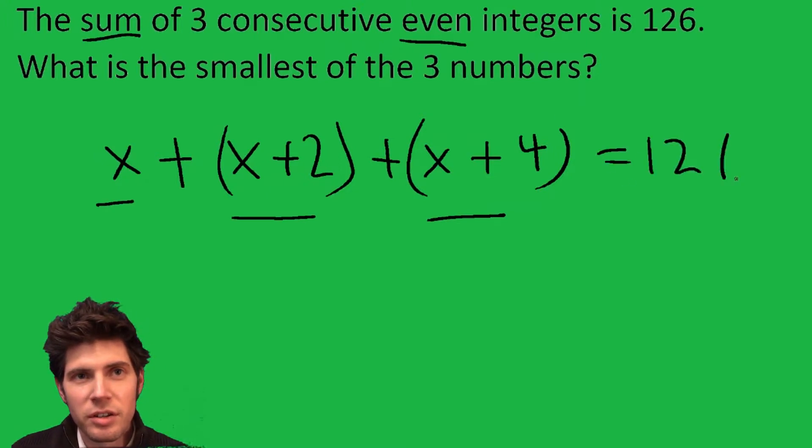I already put the pluses in there, but sum means we're just adding them together. Now we can combine like terms: x, x, x is 3x, and the 2 and the 4 give us 6, equals 126.